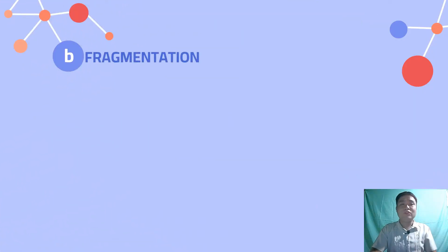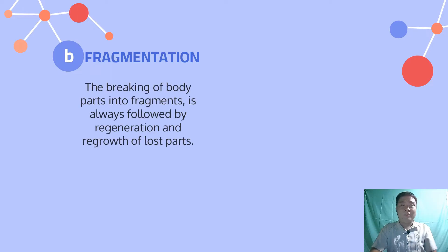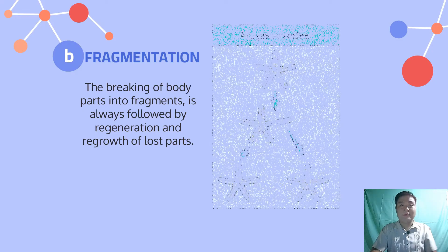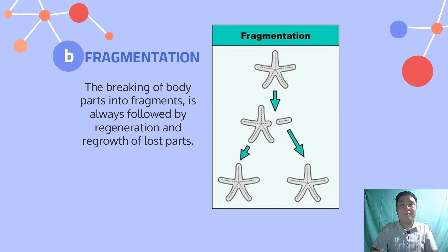The second type of asexual reproduction is fragmentation. The breaking of body parts into fragments is always followed by regeneration and regrowth of lost parts. Fragmentation is found in both animals and plants. Fungi, lichens, molds, worms, sea stars, flatworms, and sponges are common examples where reproduction occurs via fragmentation. As seen in the picture, a sea star is fragmented and the fragment becomes another organism, coming from the parent one.